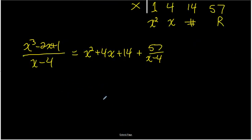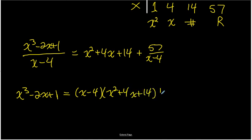The other form would be the multiplication statement. So x cubed minus 2x plus 1 is equal to the divisor x minus 4 times the quotient x squared plus 4x plus 14 plus the remainder of 57. And we could use this statement to actually check the division. If we multiply it out, we should get an expression equal to x cubed minus 2x plus 1.